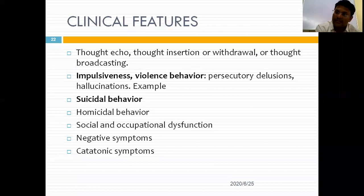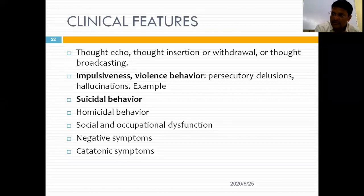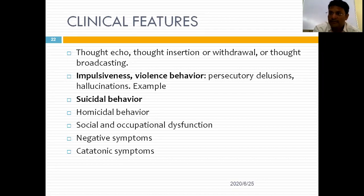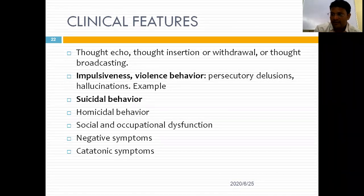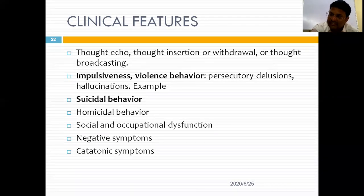Negative symptoms: the patient loses interest in daily chores, loses pleasures and hobbies, self-care decreases, he becomes very silent and stops interacting with others, and appears blunt with flat affect. Negative symptoms are always a bad prognostic factor — when we see negative symptoms, we can expect a poor course. The suicidal attempt rate in schizophrenia is 20–50%; the death rate is 5–6%, making it one of the most common causes of premature death in schizophrenic patients.